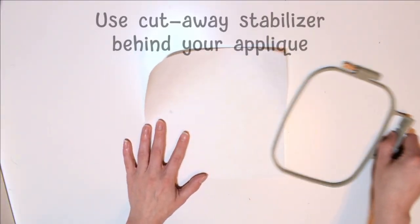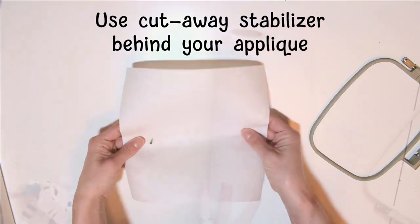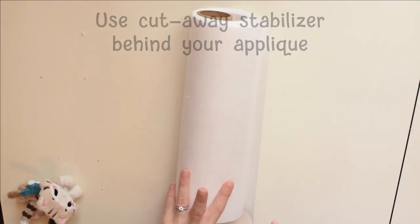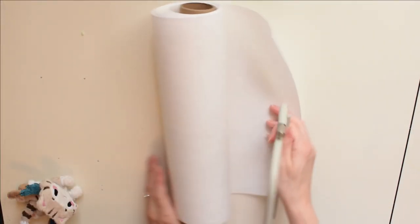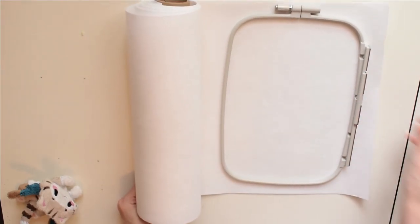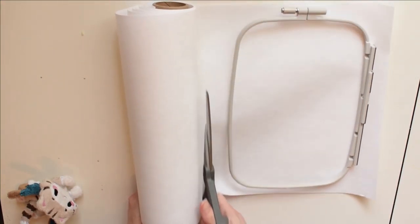Third, I make sure to use cut away stabilizer behind my applique. Not only is it stronger for the tight satin stitches so it won't tear away when you're trying to stitch it out, but it also helps with the stuffing part of this technique.